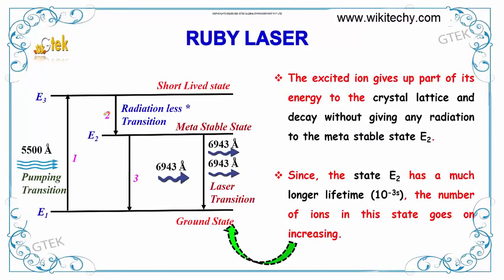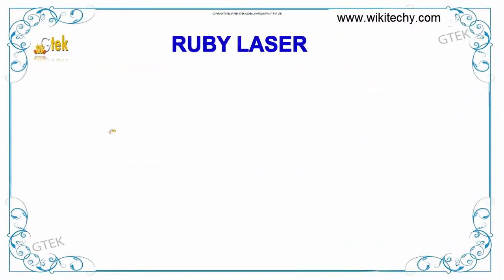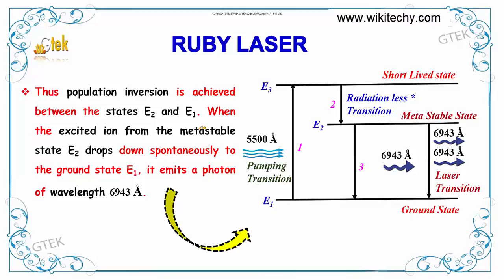The excited ion gives up part of its energy to the crystal lattice and decays without giving any radiation to the metastable state E2. Since the state E2 has a much longer lifetime — 10 to the power minus 3 seconds — the number of ions in this state goes on increasing. This population inversion is achieved between the states E2 and E1.